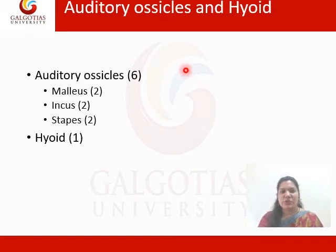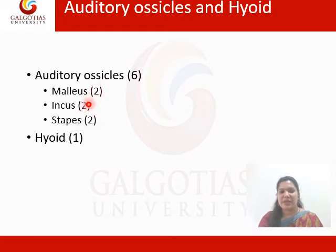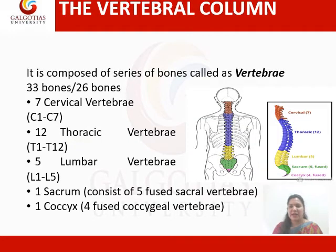In association, there are auditory ossicle bones which are malleus, incus and stapes. These six bones are paired bones present in the right and left ear auricles. Additionally, there is one hyoid bone, which is beneath the tongue and is not joined with any other bone.